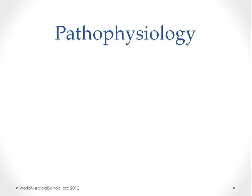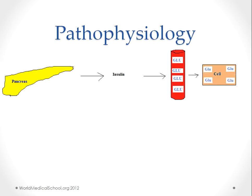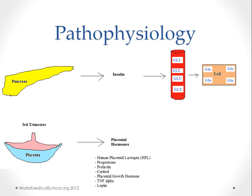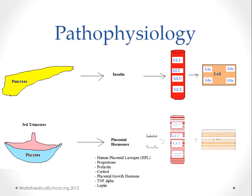The normal physiology is that the pancreas secretes insulin, which pushes glucose from the bloodstream into the cells. In gestational diabetes, the placenta in the third trimester secretes placental hormones like HPL or human placental lactogen, progesterone, prolactin, cortisol, placental growth hormone, TNF-alpha, and leptin. These hormones inhibit the action of insulin, which causes glucose to remain in the bloodstream.